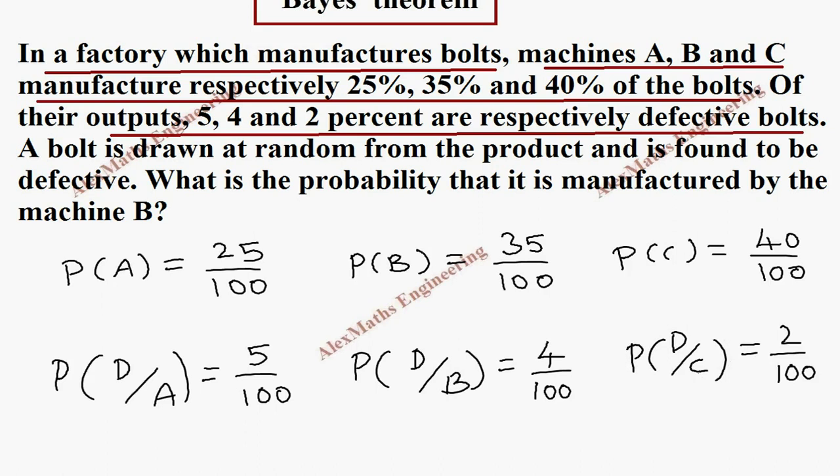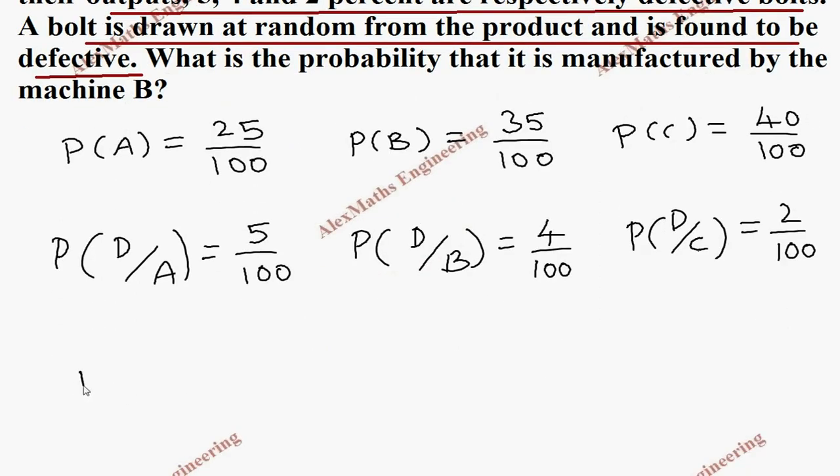Now, the question they have given: the bolt is drawn at random from the product and it is found to be defective. So, we got a defective bolt. It means, what we know or what already occurred is written in the denominator part. And what we need, we have to write in the numerator part.